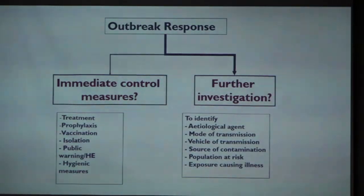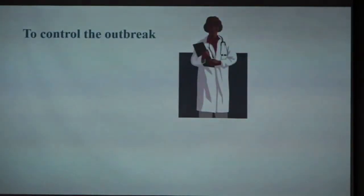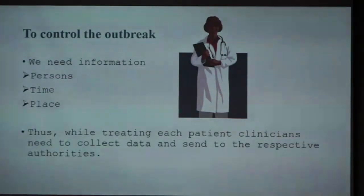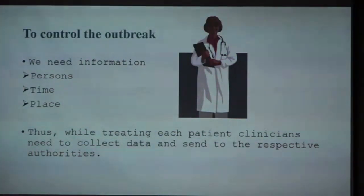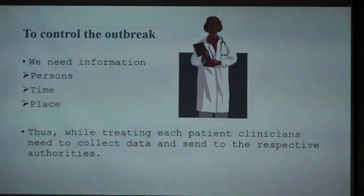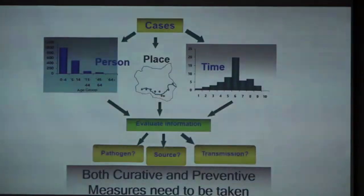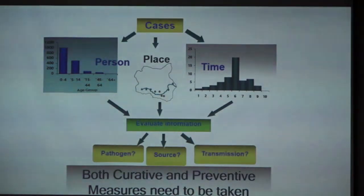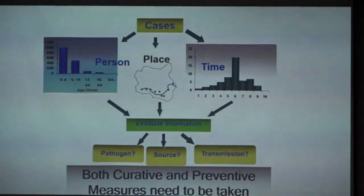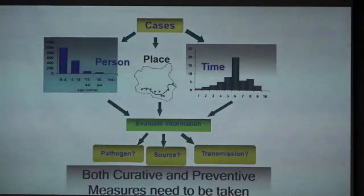To do further investigation, we need information. As public health professionals, we need person, place, and time information. While you are treating the patient, we need that kind of information from your side to ours. We have to do a proper person, place, and time analysis — we evaluate and take preventive measures simultaneously. While you are treating the patient within the institution, we are taking preventive measures in the field. Those aspects are very important in outbreak prevention.